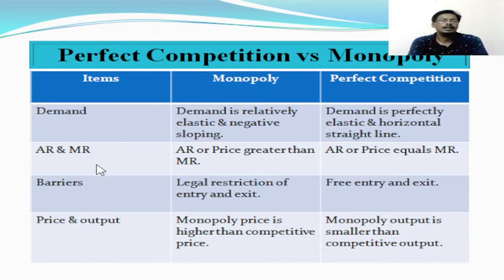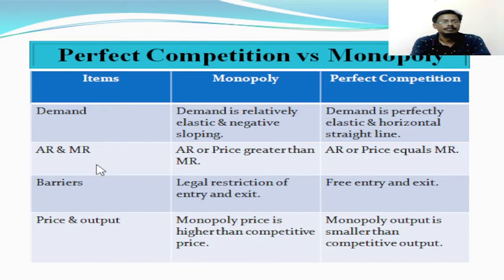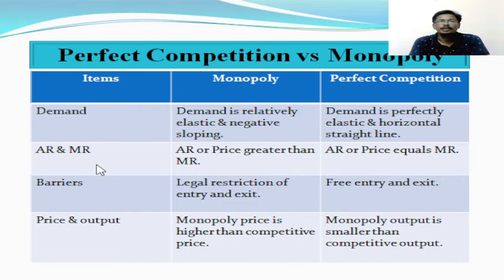Another difference relates to the revenue concept. In monopoly, the monopoly producer's main aim is to maximize profit. To maximize profit, he maximizes sales by charging lower and lower prices. Accordingly his AR falls and MR follows it, with the rate of fall in MR always greater than AR. As a result, AR remains higher than MR. But in perfect competition, as price is fixed, AR is also fixed, and MR remains fixed and becomes equal to AR.